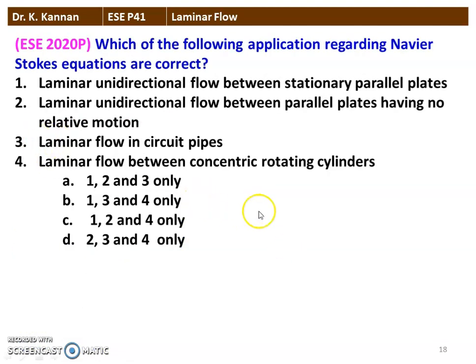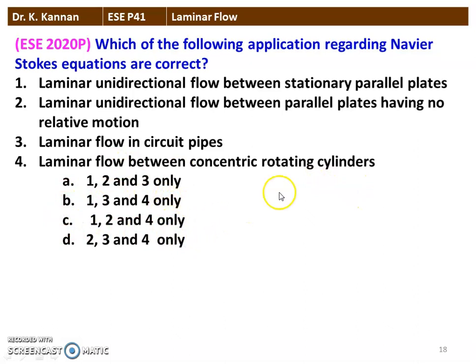The next question from the 2020 question paper: Which of the following applications regarding the Navier-Stokes equation are correct? The four options are: laminar unidirectional flow between stationary parallel plates; laminar unidirectional flow between parallel plates having no relative motion; laminar flow in a circular pipe; laminar flow between concentric rotating cylinders. The correct answer is option A — statements 1, 2, and 3 are correct. The Navier-Stokes equation is not applicable for concentric rotating cylinders.